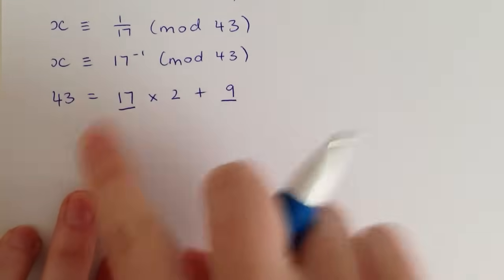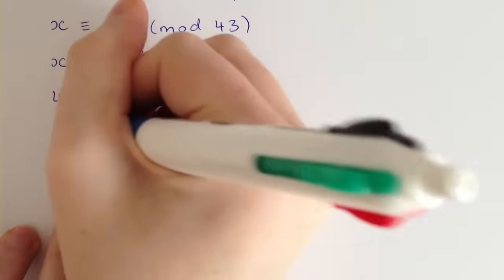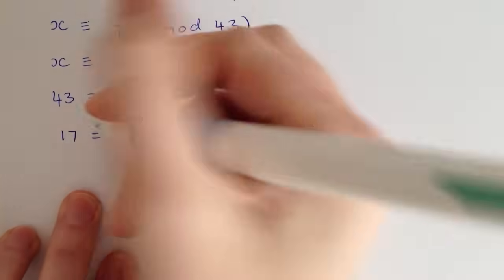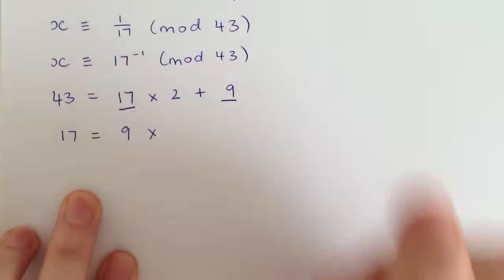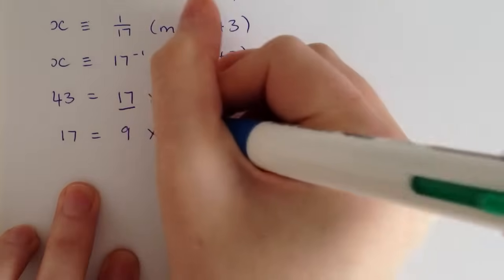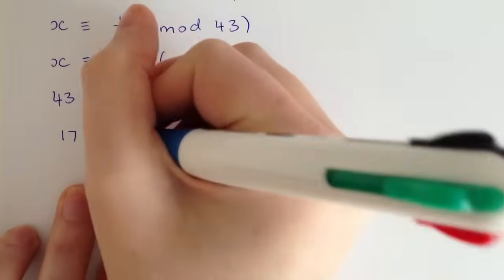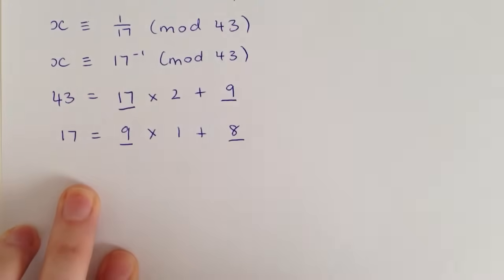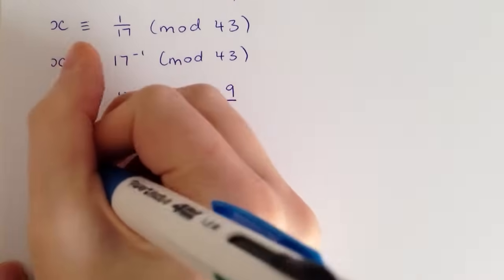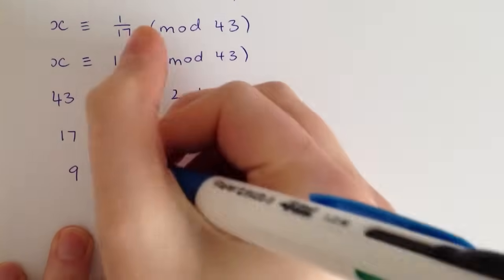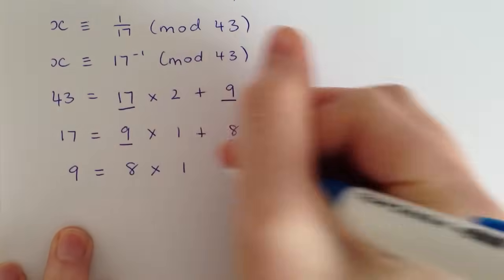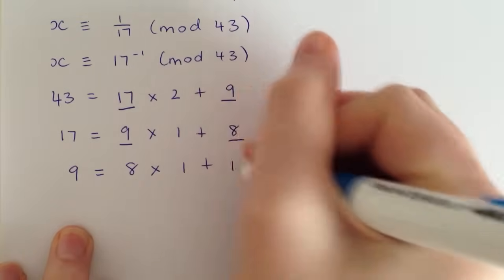So then we bring this 17 down, bring the 9 down, and that's times what number, which is obviously 1, and then plus 8. Underline them again. Then bring the 9 down, bring the 8 down, and that's obviously times 1 plus 1.